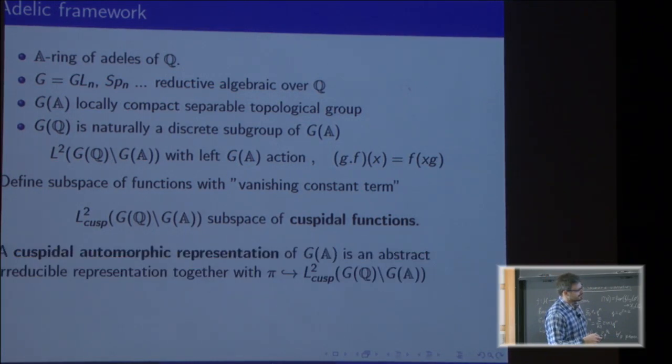This is analogous to vanishing constant term. Then we define a cuspidal automorphic representation: these are abstract representations of G(A) together with an embedding into this space of cusp forms.